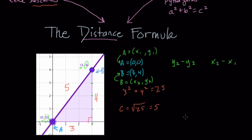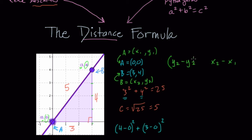So here we have 4 minus 0 and 3 minus 0 in numbers. With the Pythagorean theorem, we took 3 and squared it, and 4 and squared it, and added them together. So here we're going to square these terms just like we squared before and add them together. With the algebra, we square each of those terms and add them together — though we won't expand it yet, since that involves distributive property aspects we'll get to in a bit.